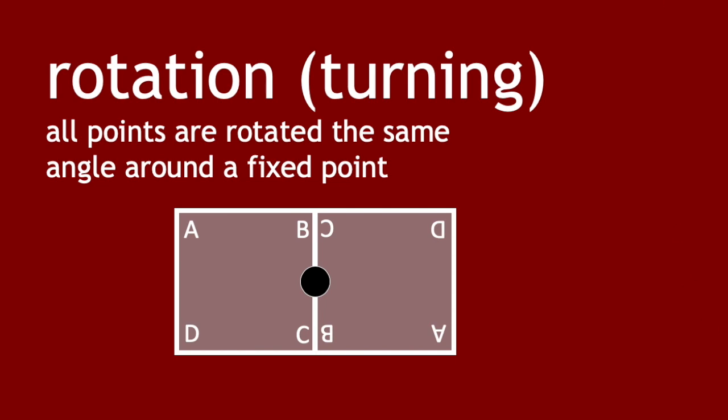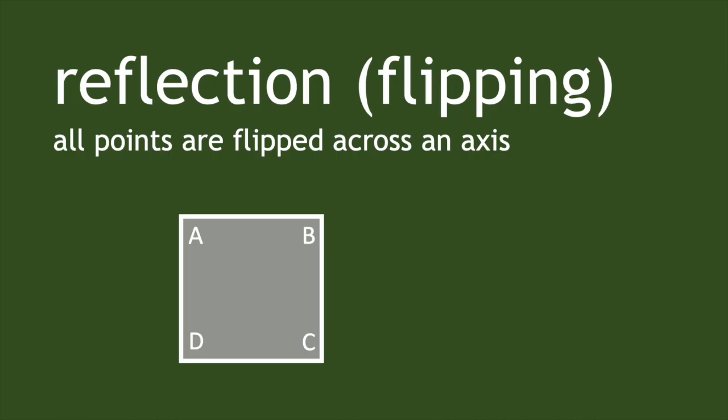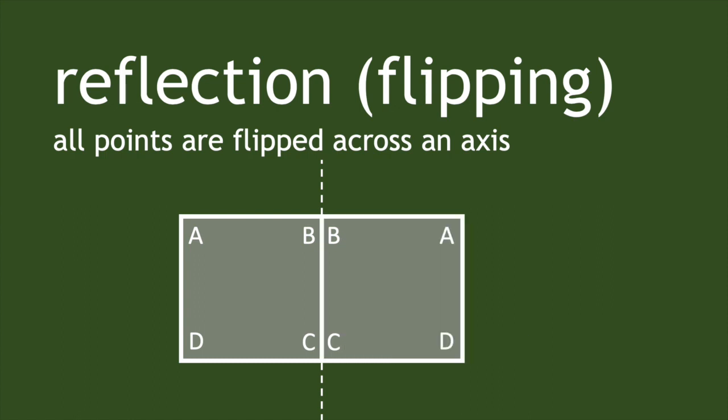The other isometry of the plane we could use is reflection, or flipping. With reflection, we have this axis of reflection, and then every point of the shape is flipped to the other side of that axis.